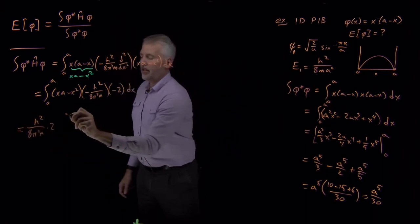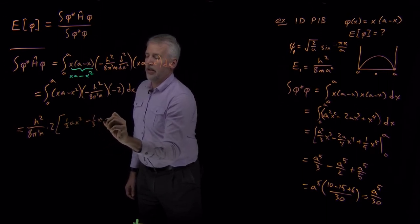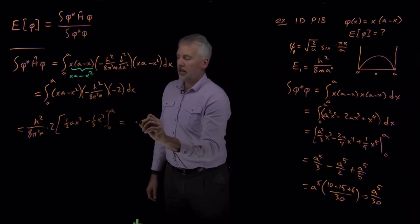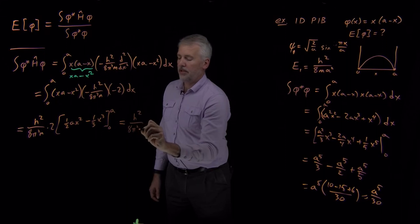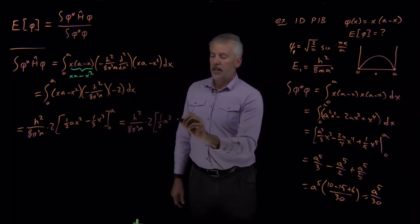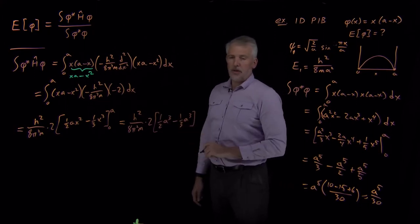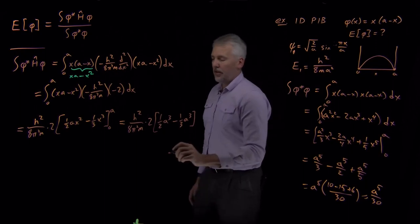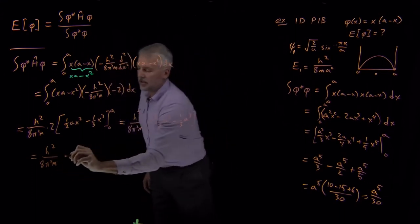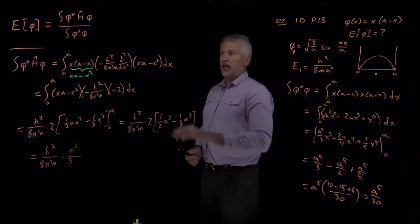Pulling the constants out front: h squared over 8 pi squared mass times 2. The integral of x(a minus x) is (1/2)a x squared minus (1/3)x cubed, evaluated from zero to a. Plugging in a: (1/2)a cubed minus (1/3)a cubed. The net result is 1/2 minus 1/3 equals 1/6, and 2 times 1/6 is 1/3. So the numerator equals h squared over 8 pi squared mass, times a cubed over 3.